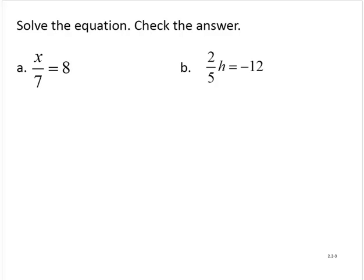So here we have the variable term isolated. But now we're dividing the variable by, in this case, 7. So to remove that division by 7, I will multiply the left-hand side by 7 and the right-hand side by 7.